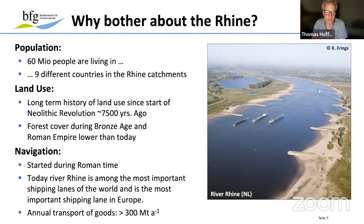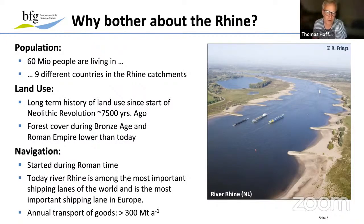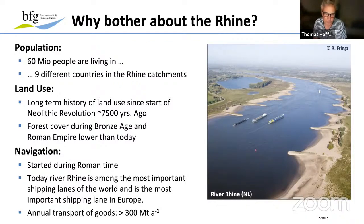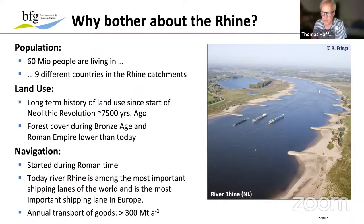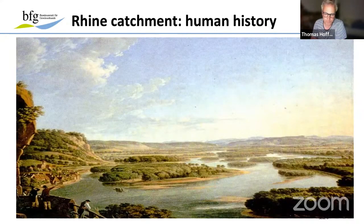Navigation is a very important point today. The River Rhine is among the most important shipping lanes in the world and the most important in Europe. Traffic on the Rhine is critical for the economy of central Europe — not only for the Netherlands, France, and Germany, but also for Switzerland. Annual goods transport is around 300 million tons per year, which is much more than the suspended sediment transport.